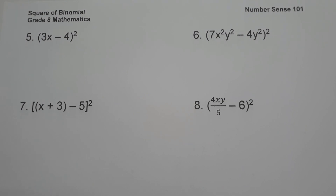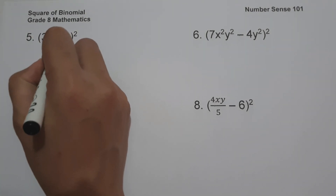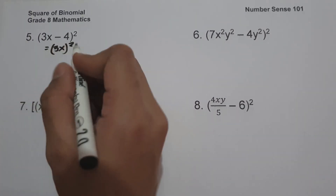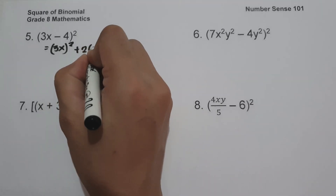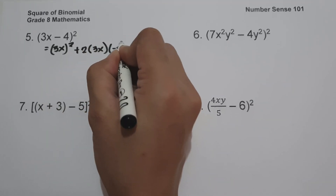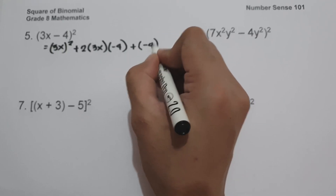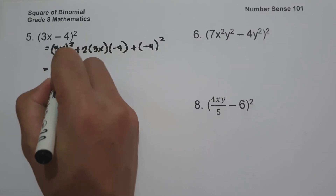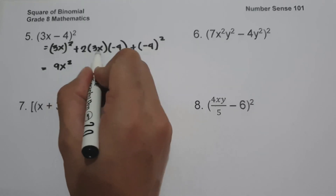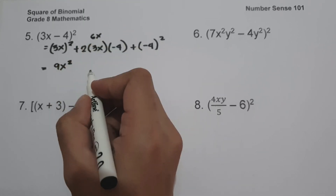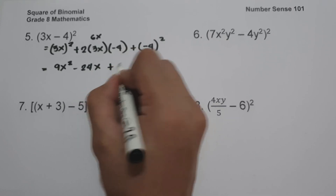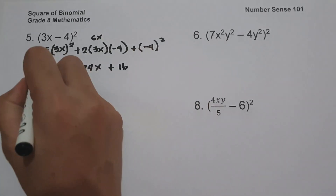On number five, we have the quantity (3x - 4) squared. Let us square the first term, 3x: (3x)² = 9x². Then multiply the first and last term by the constant 2: 2 times 3x = 6x, and 6x times negative 4 = negative 24x. Plus the square of the last term: (-4)² = 16. So our answer is 9x² - 24x + 16.